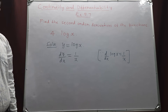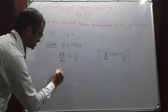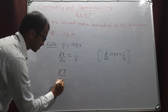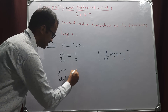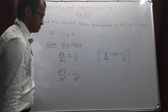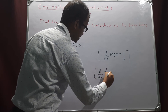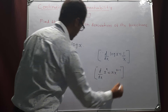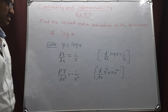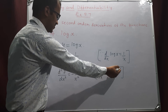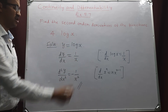Differentiating both sides again with respect to x, d squared y by dx squared equals differentiation of 1 by x, which is minus 1 by x squared. This is because differentiation of x power n is n into x power n minus 1, so differentiation of x power minus 1 gives minus 1 into x power minus 2, that is minus 1 by x squared. This is the second order derivative of log x.